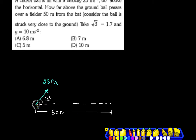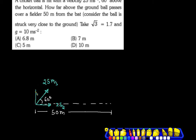The horizontal component is 25 cos60, which is 25 by 2. And the vertical component is 25 sin60, which gives 25 root 3 by 2.